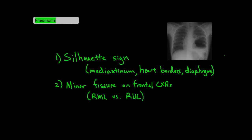What I want to talk about in this video is what pneumonia looks like in every lung lobe and some high-yield characteristics to look for. The two big things that help you identify which lung lobe a pneumonia is in include the silhouette sign — which covers the mediastinum, the heart borders, and the diaphragms — and second, the minor fissure on frontal chest x-rays.